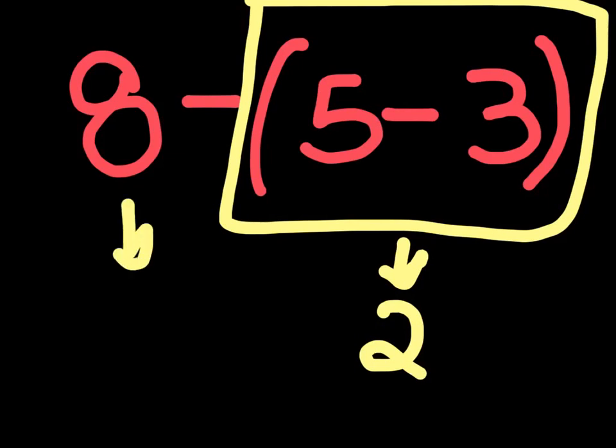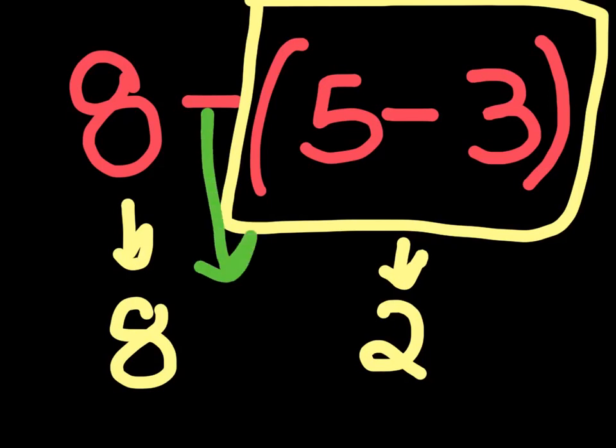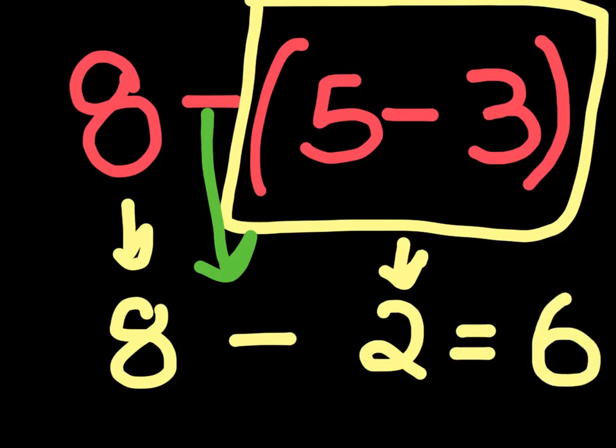We have to bring down the 8, and we bring down the subtraction sign also. So we get our answer to be 8 minus 2, which is 6. Alright, fairly simple.